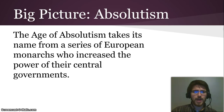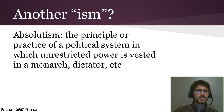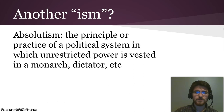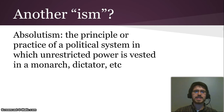Here's the big picture for absolutism. The age of absolutism takes its name from a series of European monarchs who increased the power of their central governments. Absolutism is the principle or practice of a political system in which unrestricted power is vested in a monarch, dictator, etc. So you're putting all the power in a political system in one person, who might give it out to people underneath them, but ultimately it's his to hold.